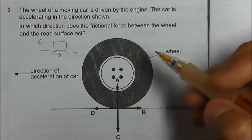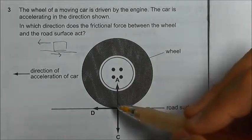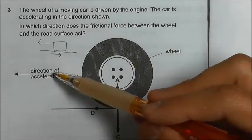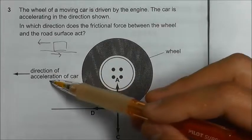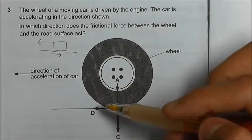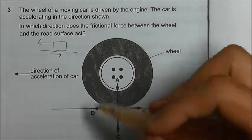However, in the case of a wheel, the frictional force is always in the direction of the motion of the car. So if the car is accelerating to the left, the frictional force will be to the left as well.